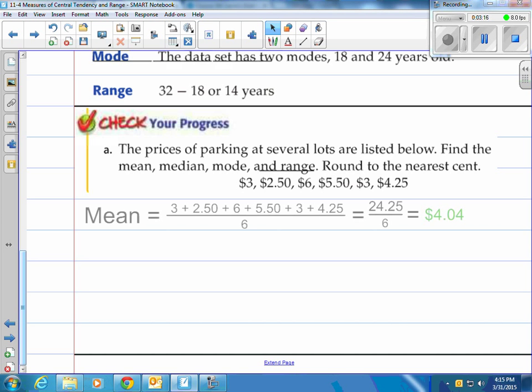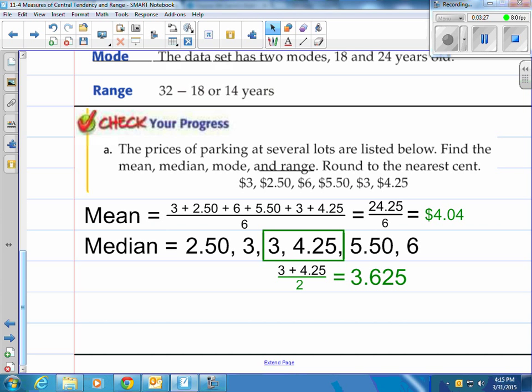All right, first off, our mean. Add them all up, divide by six, you get four dollars and four cents. How about our median? We got to organize it from least to greatest. I did that. I noticed that we have two in the middle because we have six numbers. So we have two in the middle, three and four point two five.